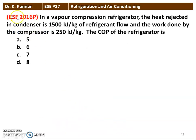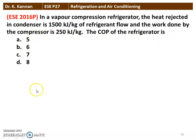The next question from the 2016 question paper: In a vapor compression refrigerator, the heat rejected in the condenser is 1500 kilojoules per kilogram of the refrigerant flow, and the work done by the compressor is 250 kilojoules per kilogram. The COP of the refrigerator is — we have 4 options: 5, 6, 7, 8. The correct answer is 5. We will see how in the next slide.